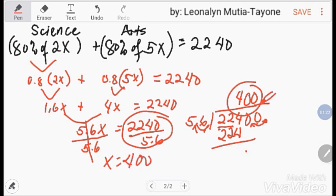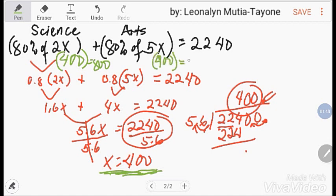Now, si x, 400. Original sa each. x is equal to 400. So, 2 times 400, that is 800. Ito naman, 5 times 400, that is 2,000. So, ang sagot. Yung sa science book, ang original niya is 800. Tapos, sa art, ang original niya is 2,000. A total of 2,800. Yan yung original.